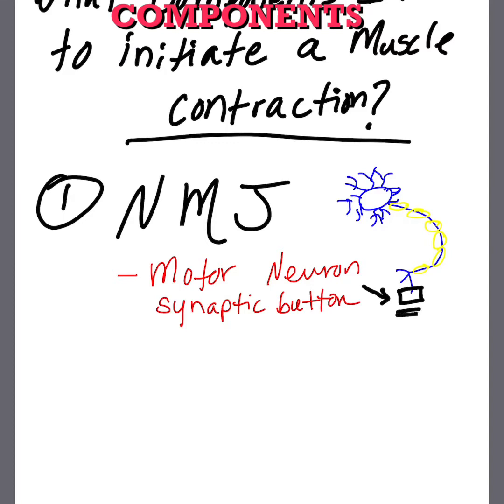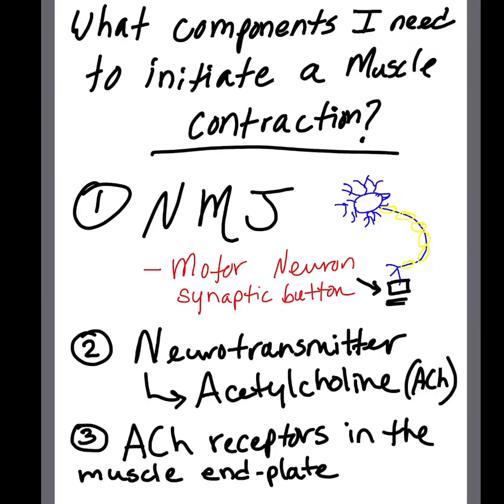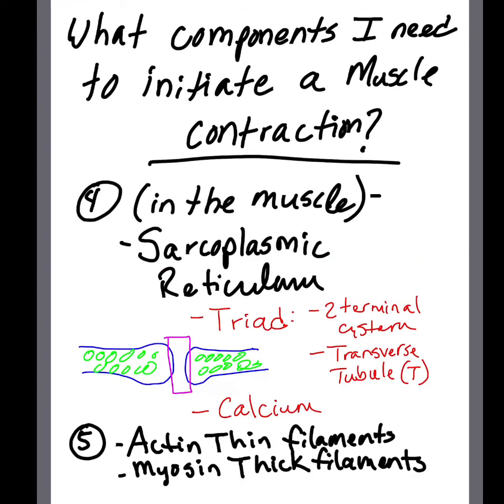Second, we need a neurotransmitter, specifically the one called acetylcholine, shortened to ACh. And of course, ACh receptors in the muscle end plate.